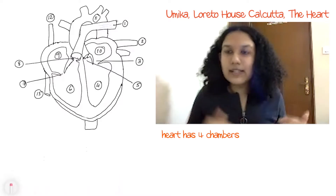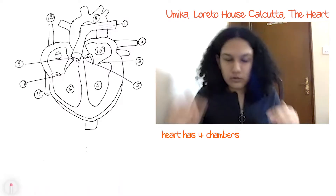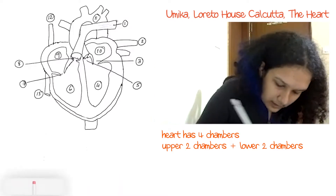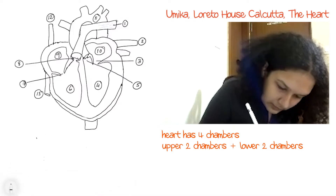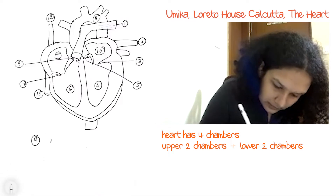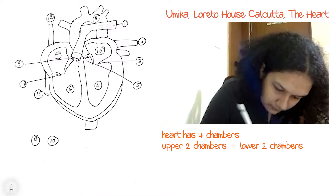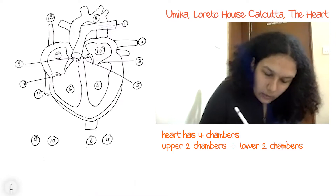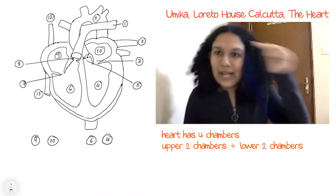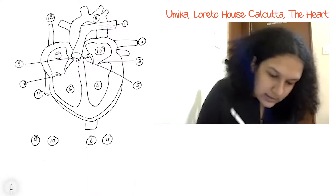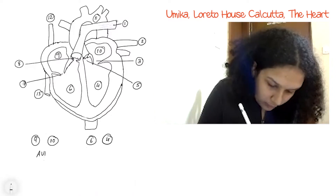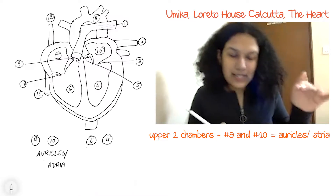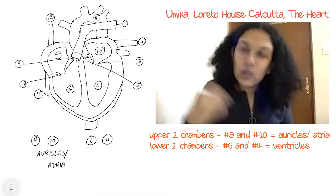The heart has four chambers — the upper two and the lower two. In this diagram, the upper two chambers are labeled nine and ten, and the lower two chambers are labeled six and four. The upper two chambers — nine and ten — are called the auricles or the atria, and the lower chambers — six and four — are called the ventricles.